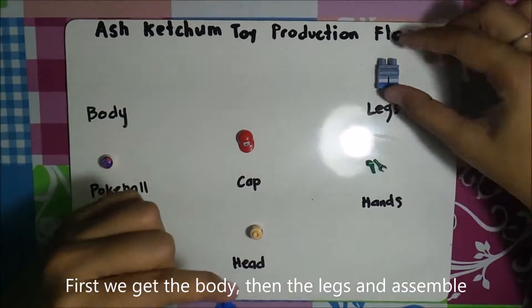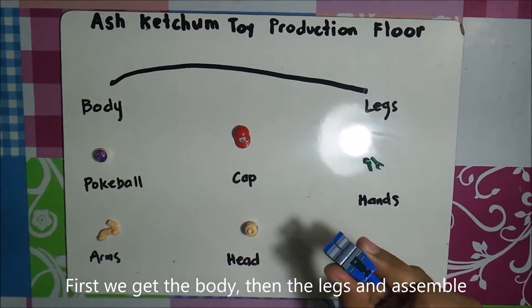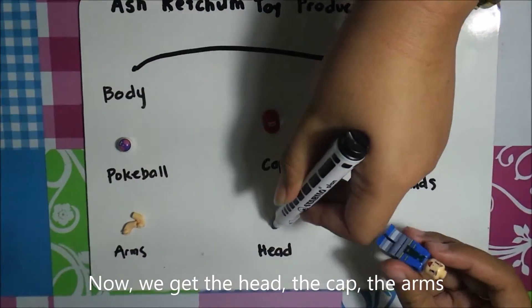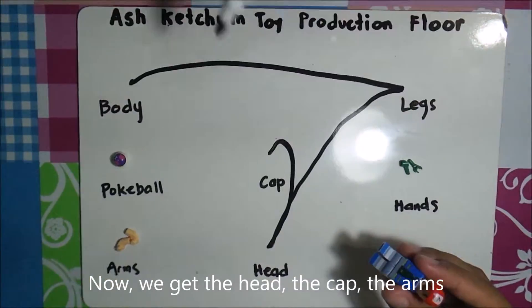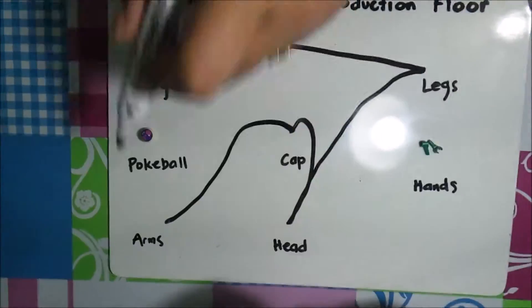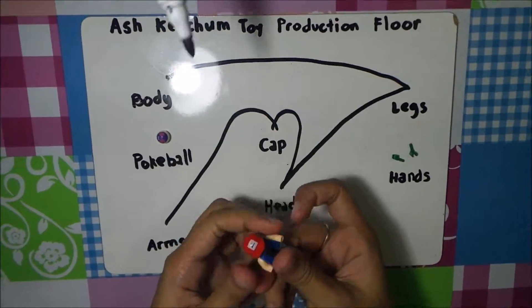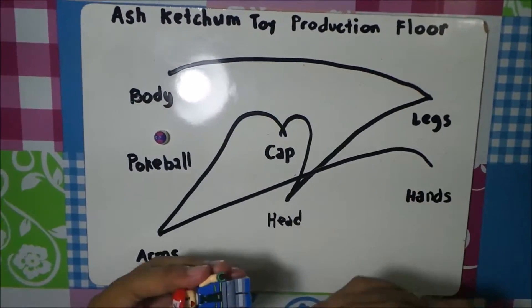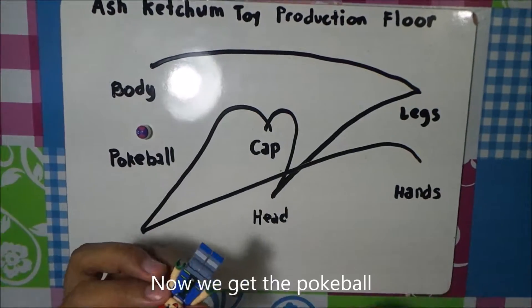First we get the body and the legs and assemble. Now we get the head, the cup, the arms. Now we get the pokeball.